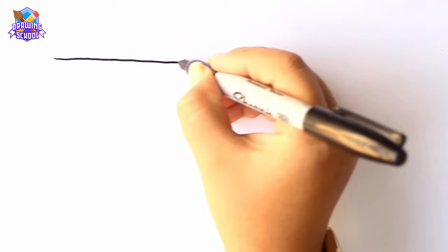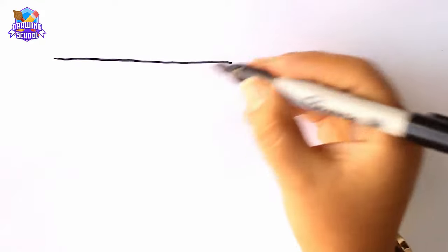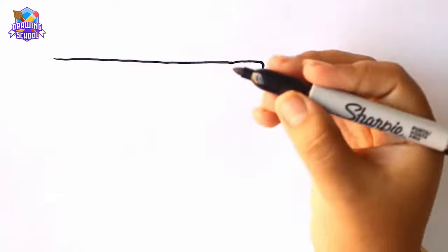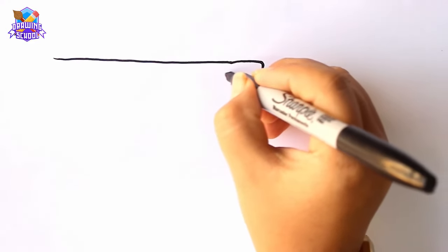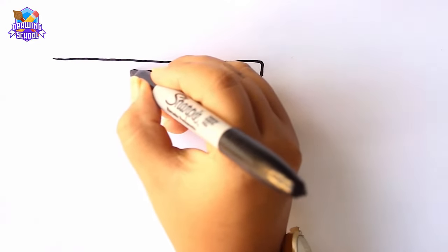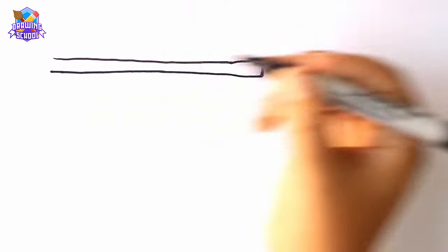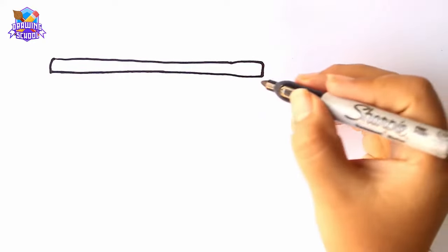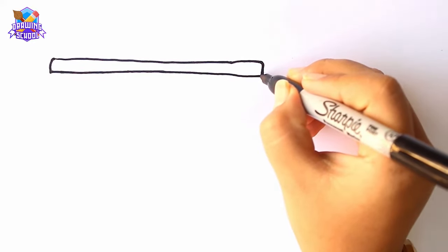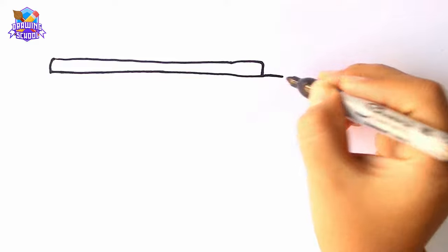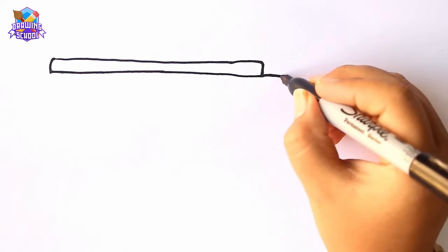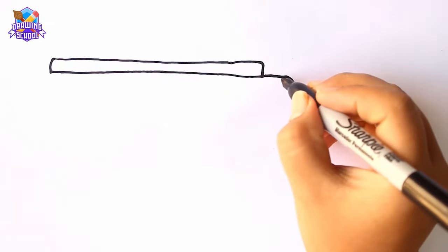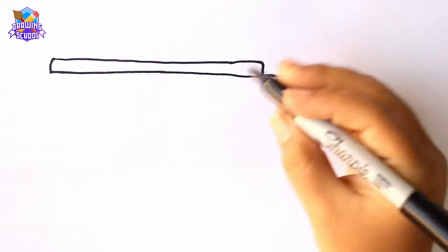First, I'm going to draw a large rectangle like this. Now I'll continue this line like this and I'm going to draw a little circle right here.